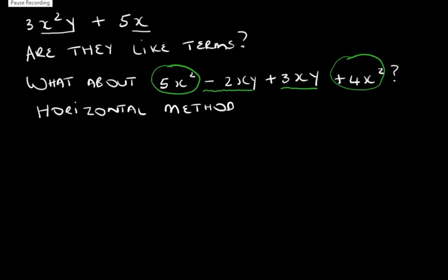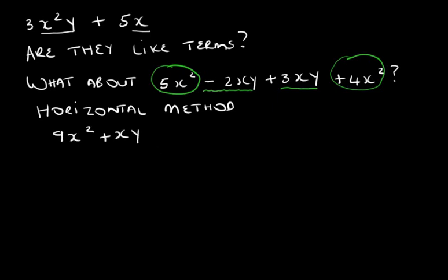There are two methods for solving this expression. We can use the horizontal method or the vertical column method. When everything is written in one line, this is called the horizontal method. So we say 5x squared plus 4x squared gives you 9x squared, and minus 2xy plus 3xy gives you positive 1xy.